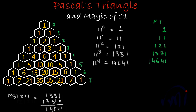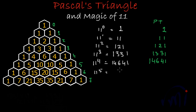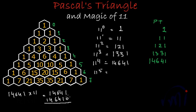For 11 to the power 5, this equals 14641 multiplied by 11, which is 1, 4, 6, 4, 1 added to 1, 4, 6, 4, 1, 0. Adding column by column: 1 plus 0 = 1; 4 plus 1 = 5; 6 plus 4 = 10, write 0 carry 1; 4 plus 6 plus 1 = 11, write 1 carry 1; 1 plus 4 plus 1 = 6; and 1. So 11 to the power 5 is 161051.